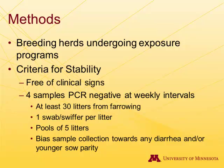The testing protocol requires four samples of PED PCR-negative results at weekly intervals. After four weeks of all negatives, they're considered stable and we start introducing sentinel animals. For the sampling protocol, we want at least 30 litters sampled — one swab or swiffer per litter, with those samples pooled together for every five litters, ending up with six PCR submissions.